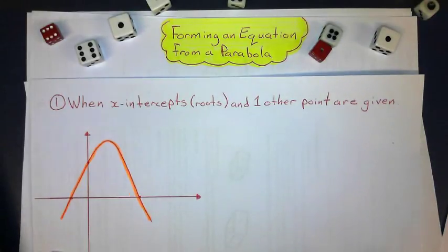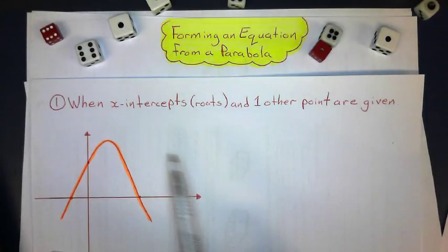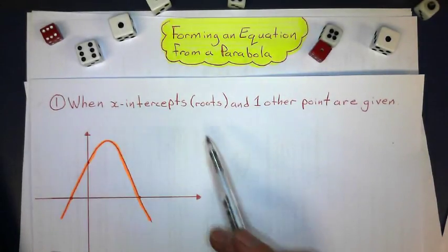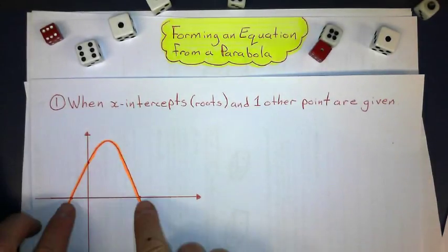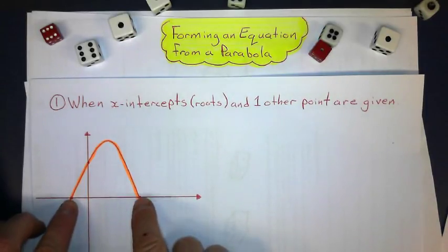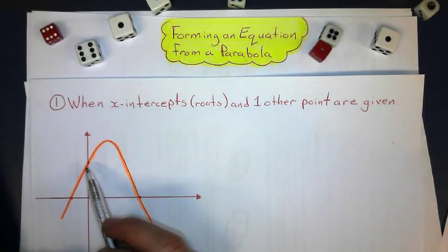In this lesson I'm going to show you how to get the equation from a parabola, and I'll go through two different cases. The first case is when you're given a parabola and the x-intercepts, or the roots of the equation, and one other point on the curve are given.